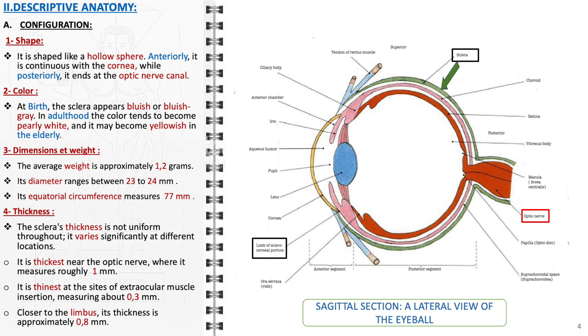At the boundary between the sclera and cornea, its thickness is approximately 0.8 millimeters. This variation in thickness is critical for the sclera's dual role in providing robust protection to the eye's internal components and facilitating the diverse movements and attachments of the extraocular muscles. This structural design underscores the sclera's importance in maintaining the integrity and functionality of the eye.